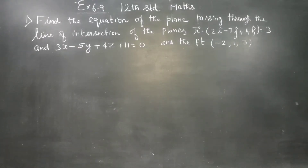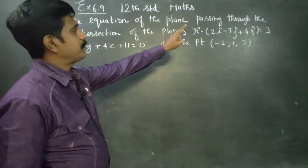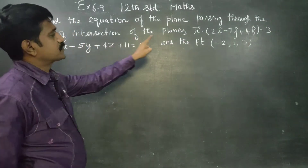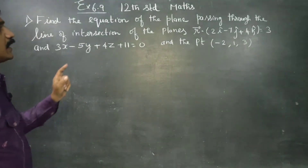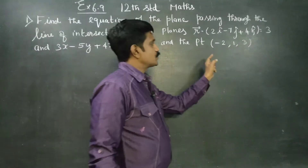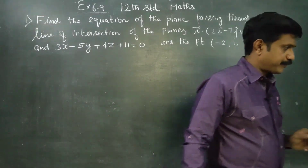Dear 12th standard students, in exercise number 6.9, find the equation of the plane passing through the line of intersection of the planes and the point minus 2, 1, 3.